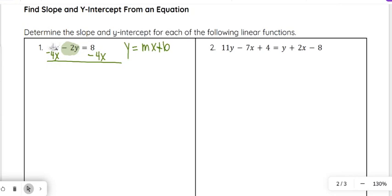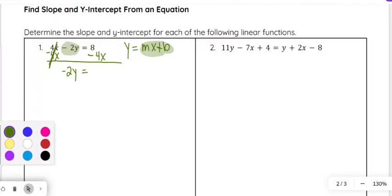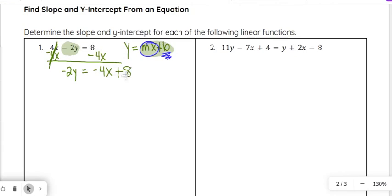We do that because it is a positive 4x originally, the opposite of that to turn it into 0x, which makes it disappear, is subtracting 4x. Then we have -2y on the left side equals, and then my x-term is -4x, and then 8 is my constant. It's positive, so it's plus 8.